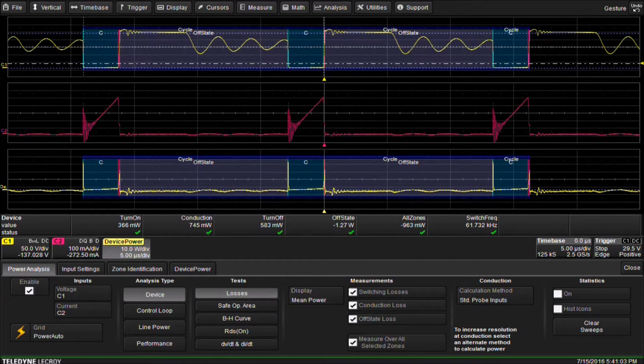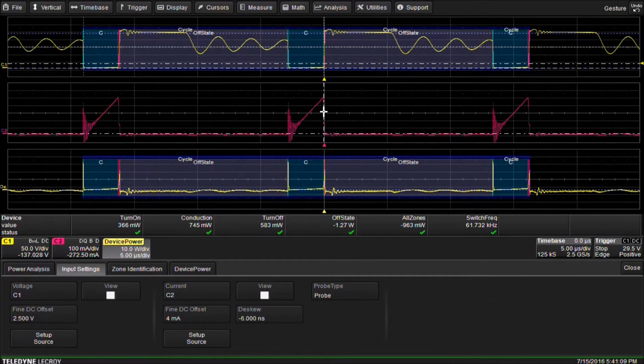All device loss measurement parameters are enabled. We select the Input Settings tab. Our probe assignment is already set with C1 assigned to voltage and C2 assigned to current.